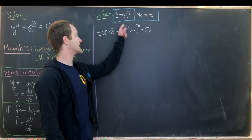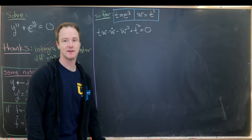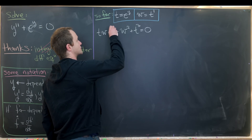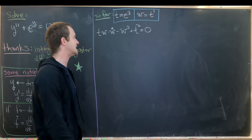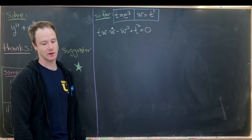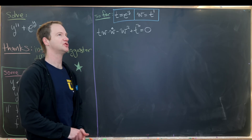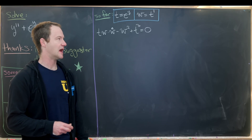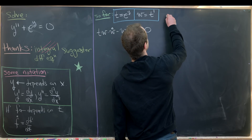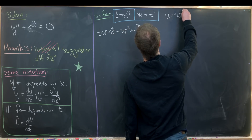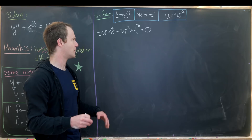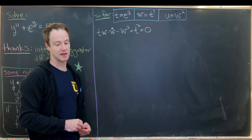We made the substitutions t equals e to the y and w equals t prime, which transformed a second order nonlinear ODE into the first order nonlinear equation: t w w dot minus w squared plus t cubed equals zero, where the derivative is now with respect to t. We'll now perform one final substitution to get a first order linear ODE. Let u equal w squared, motivated by the w squared term, which will help us linearize the equation.